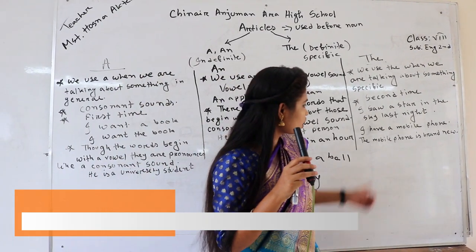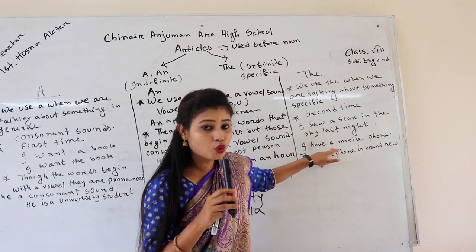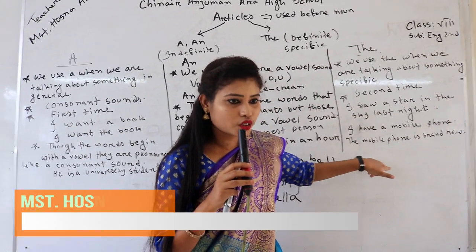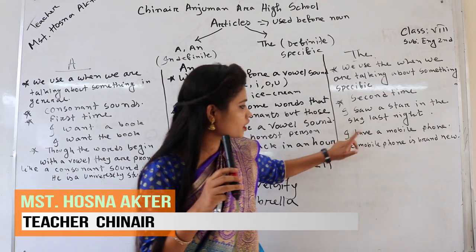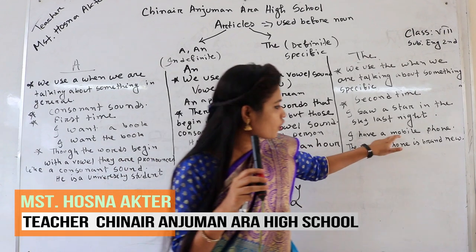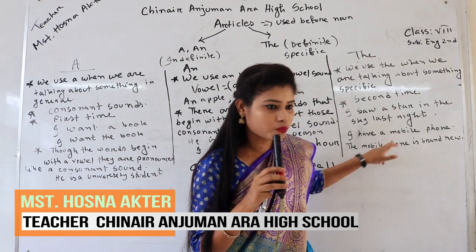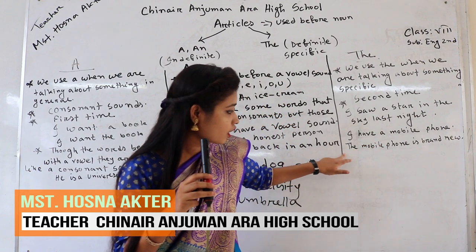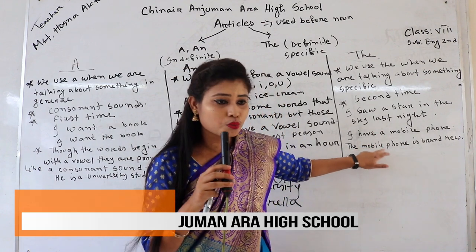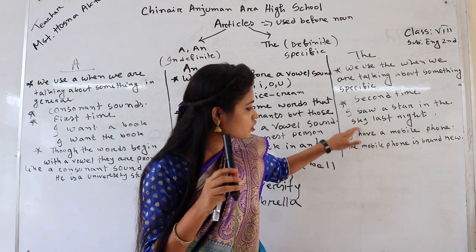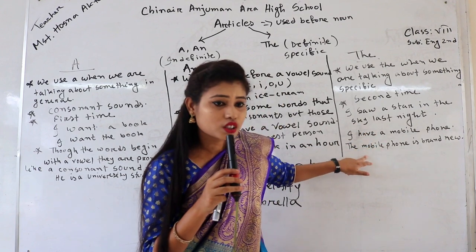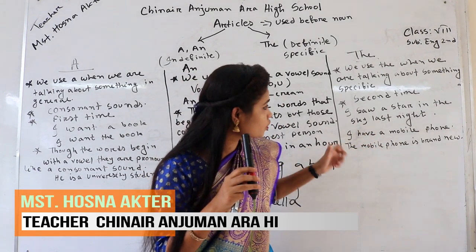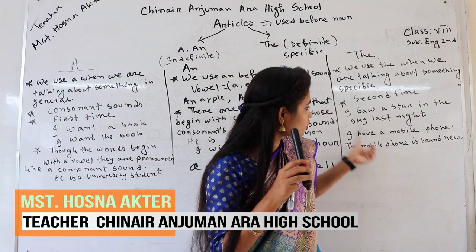We also use 'the' when we are talking about something for the second time. For example: 'I have a mobile phone. The mobile phone is brand new.' In the first sentence we use 'a' in front of 'mobile phone', but in the second sentence we use 'the' in front of 'mobile phone' because we are using the same word for the second time.